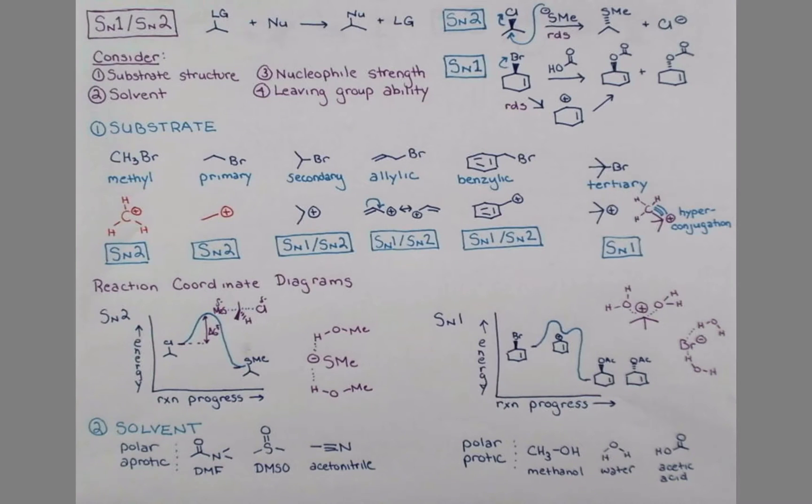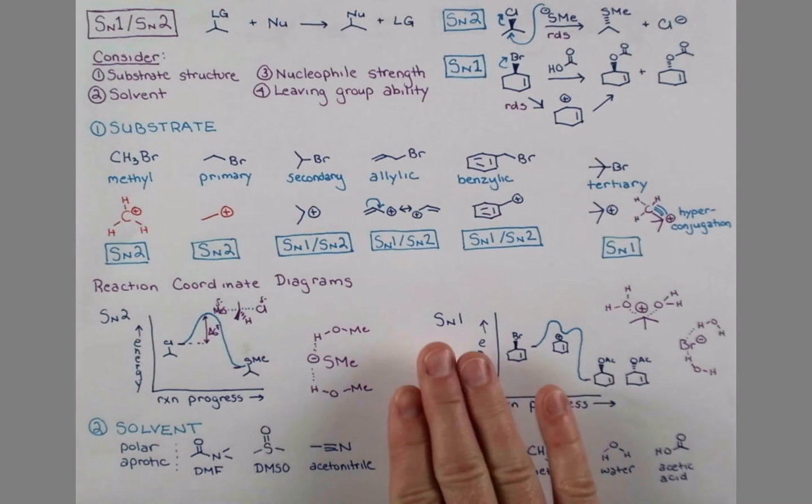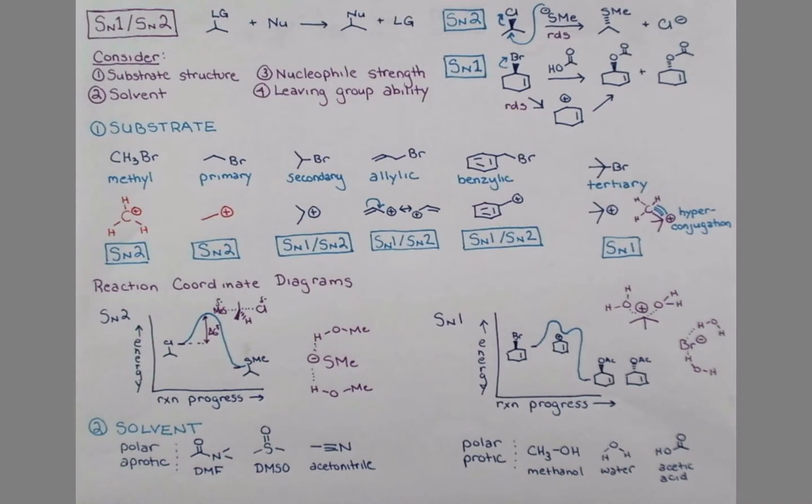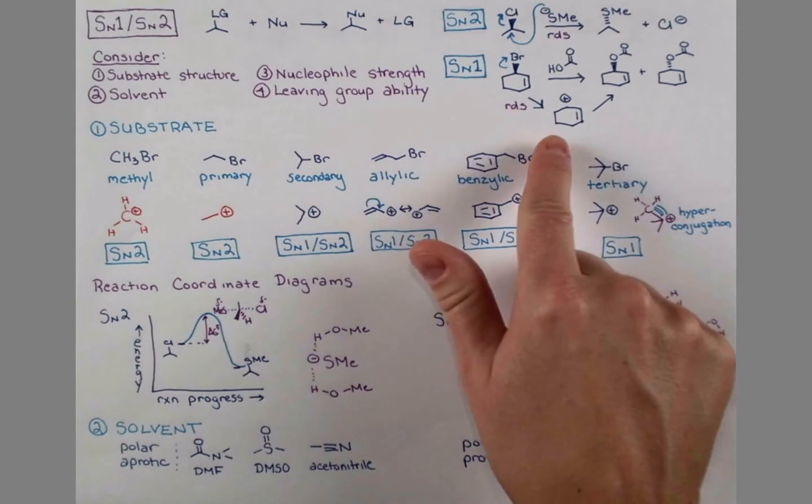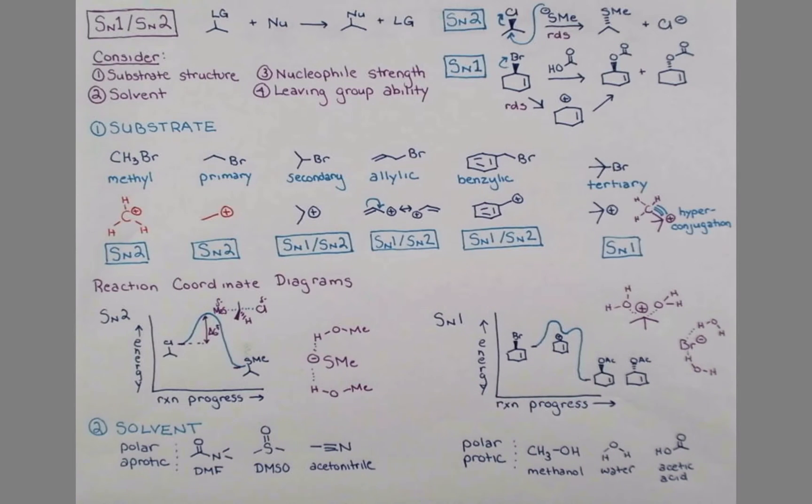Polar protic solvents increase the rate of the SN1 reaction because they are very good at stabilizing the formation of ions, which accelerates the rate-determining step. By contrast, these polar protic solvents decrease the rate of SN2 reactions, because they tie up the incoming nucleophile and raise the activation energy of the reaction.